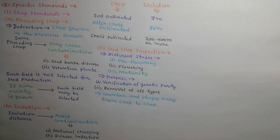The seed crops have to be inspected at different stages of crop growth as pre-flowering, flowering, and maturity stages for verification of genetic purity and removal of off-types. The number of inspections and stages of crop growth when they should be conducted vary from crop to crop.